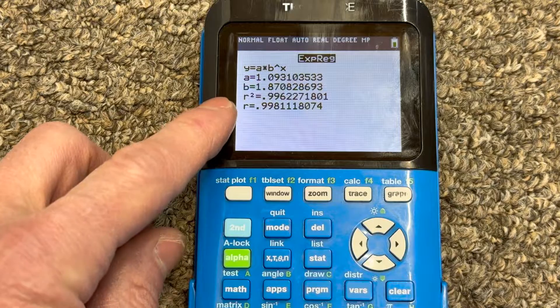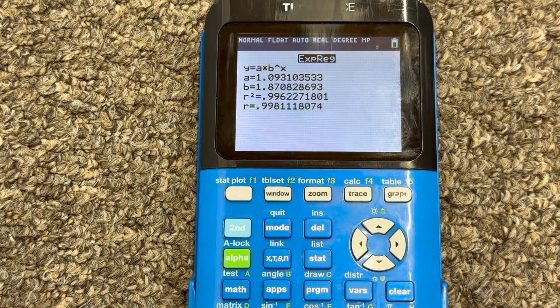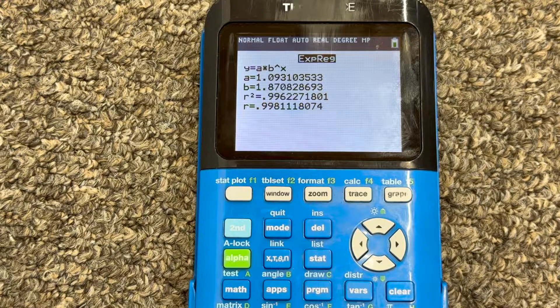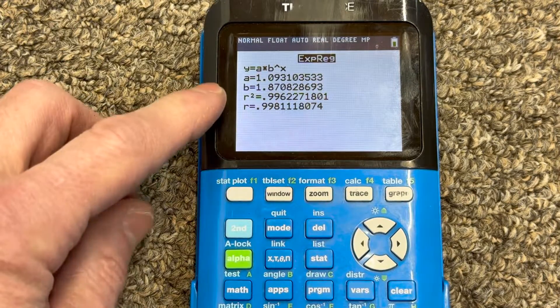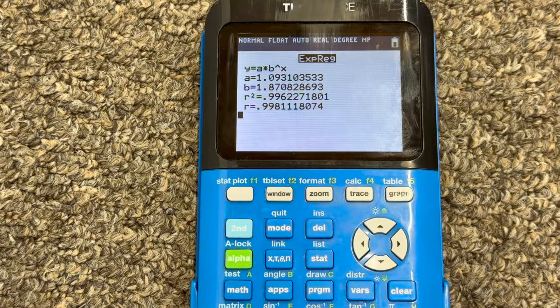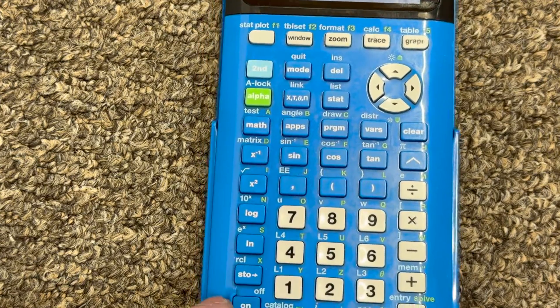And notice that this r value, which represents our correlation coefficient, that tells you how close the graph is matching to those points. Now, if you're just using your calculator for the first time, or maybe switched the batteries, and you're not seeing this r value, this correlation, what you're going to want to do is go to where it says catalog down here.